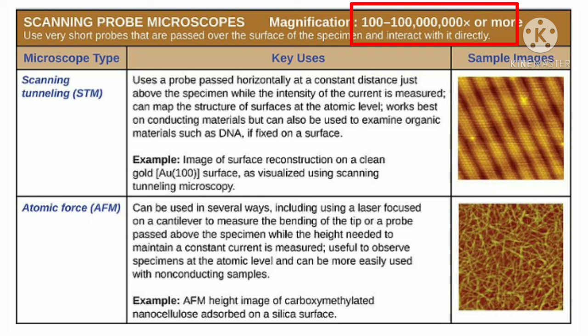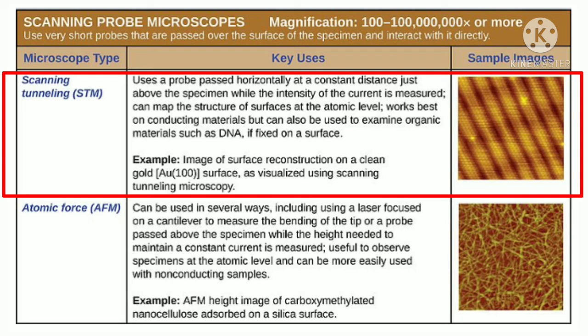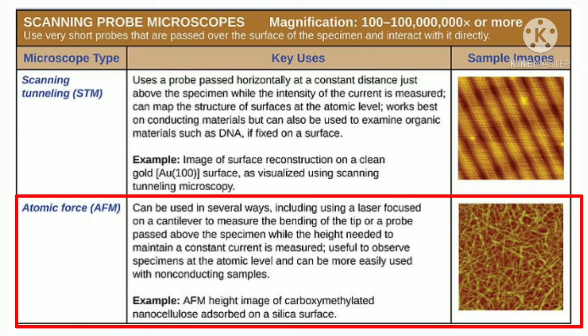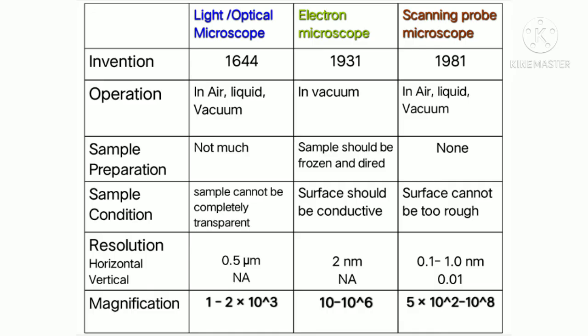The scanning probe microscope uses a very short probe or sharp tip that is passed over the surface of a specimen and interacts with it to produce an image. There are two subtypes: the scanning tunneling microscope (STM) and the atomic force microscope (AFM). The STM forms images of surfaces using a physical probe that scans the specimen, works best on conducting materials, and the probe passes horizontally at constant distance — used to view molecules like DNA. The AFM is used on non-conducting samples and consists of a cantilever with a probe at its end that scans the specimen surface, producing a three-dimensional image.